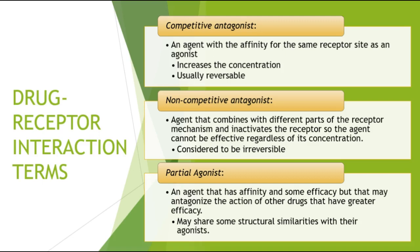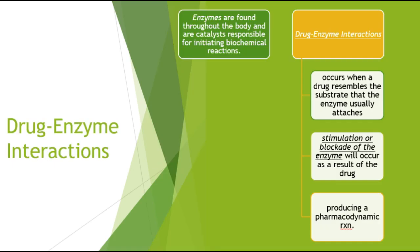There are three key terms: competitive antagonist, non-competitive antagonist, and partial agonist. A competitive antagonist has affinity for the same receptor site as the agonist; it competes by increasing concentration and is usually reversible. A non-competitive antagonist combines with different parts of the receptor mechanism, making it irreversible regardless of concentration — this effect cannot be reversed. A partial agonist has some affinity and efficacy but may antagonize drugs with greater efficacy, and may share structural similarities with the agonist.